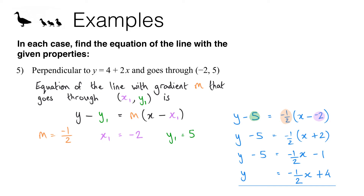The answer is y equals negative one half x plus 4. The process was exactly the same as before, apart from the extra step at the beginning where we needed to work out the gradient for our perpendicular line — it wasn't going to be the same as the original gradient. We had to compute negative 1 over the original gradient to get the perpendicular gradient.